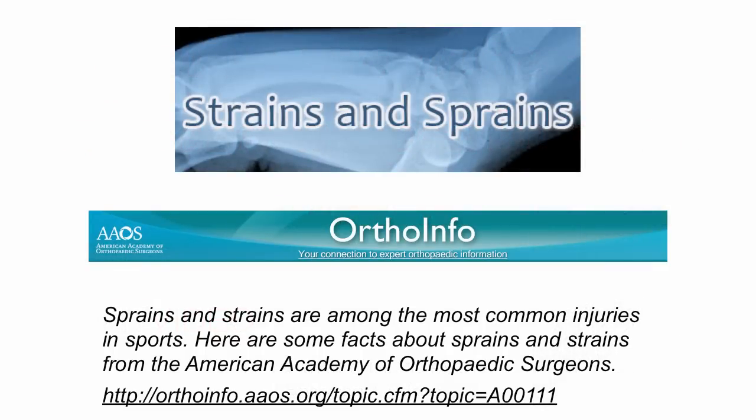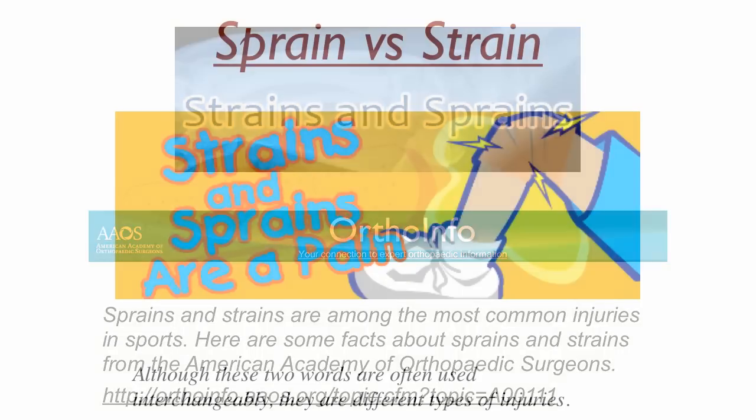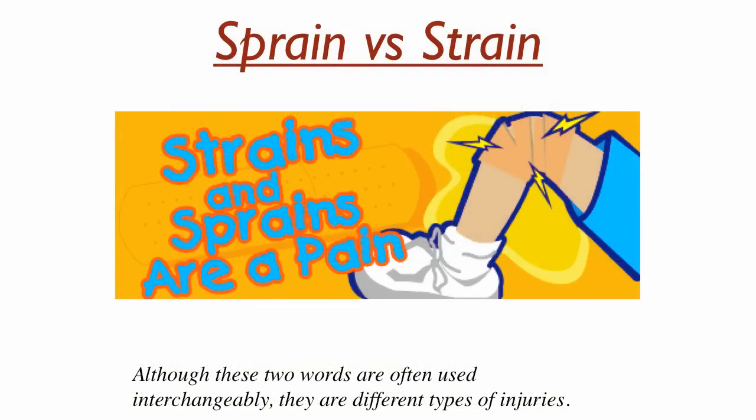Strains and sprains are among the most common injuries in sports. Here are some facts about sprains and strains from the American Academy of Orthopedic Surgeons website. Although these two words are often used interchangeably, they are actually different types of injuries.